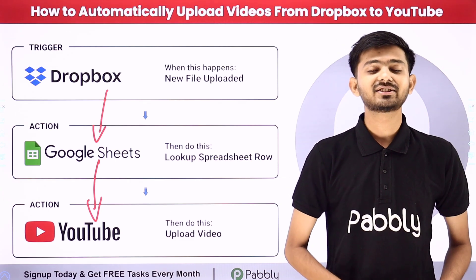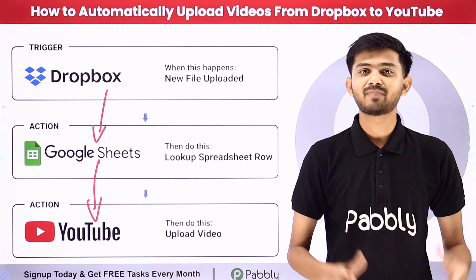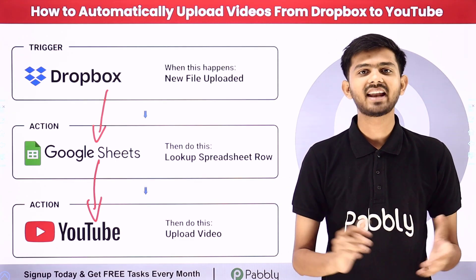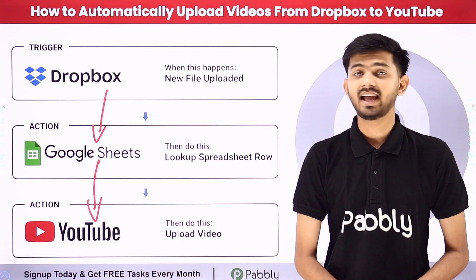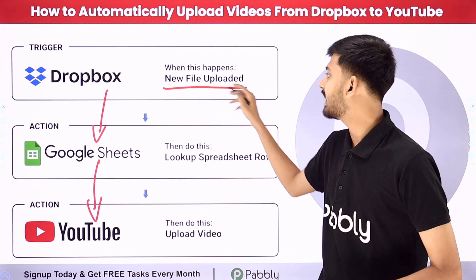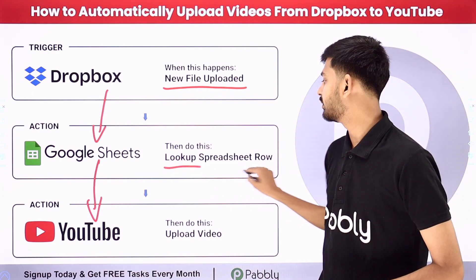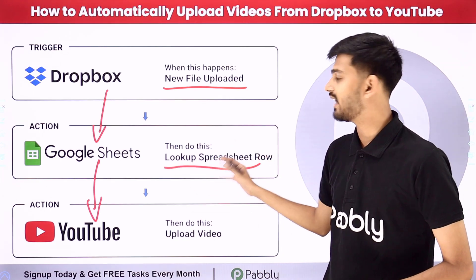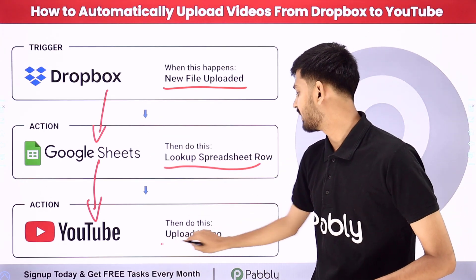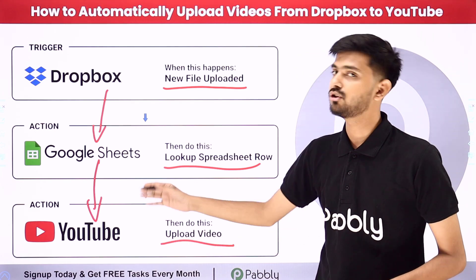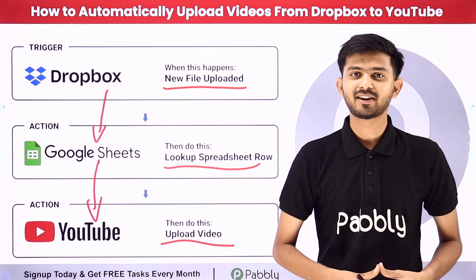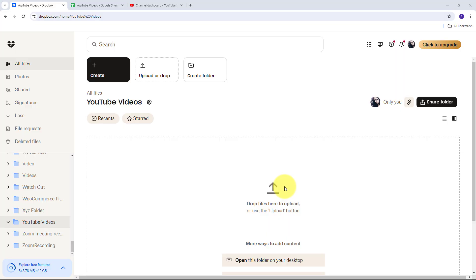For building this connection, I am going to use Pabbly Connect, which is an amazing software for automation and integration. With Pabbly Connect, whenever I upload a new file on Dropbox, then automatically I am going to look up values from Google Sheets and upload my video to my YouTube channel. Let me take you to my computer screen.